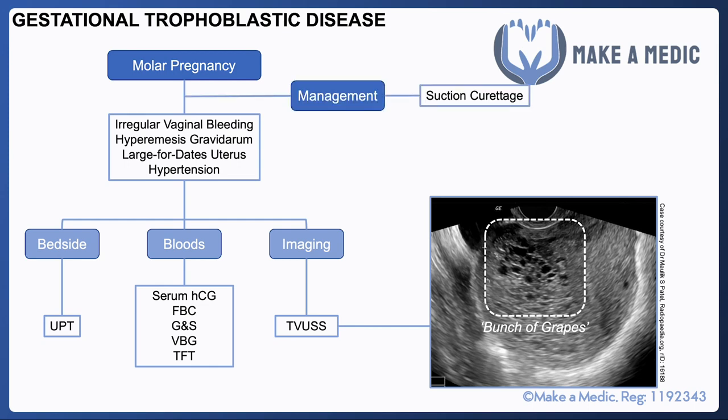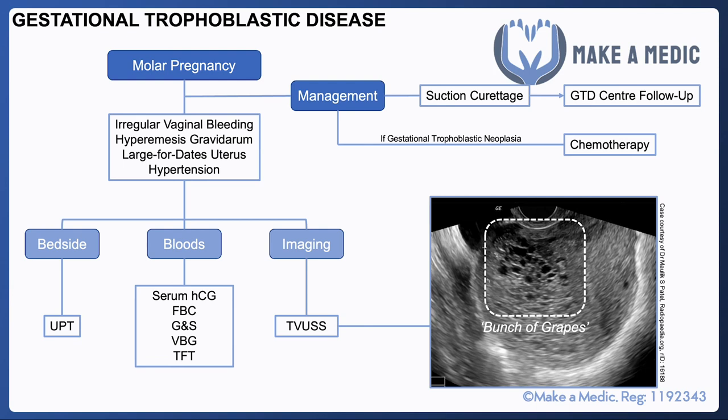Management needs to be dealt with surgically using something called suction curettage, and the patient should be followed up at a gestational trophoblastic disease center. Given that gestational trophoblastic disease arises due to abnormal fusion of gametes and leads to a rapidly growing ball of cells, it can actually be malignant in some cases, in which case it's referred to as gestational trophoblastic neoplasia, and these patients may actually require chemotherapy to manage the disease.